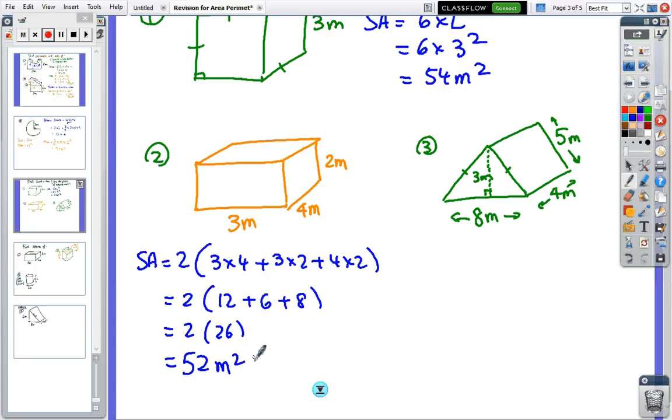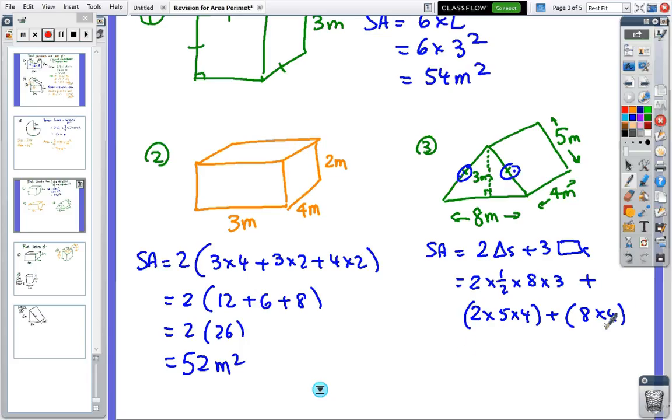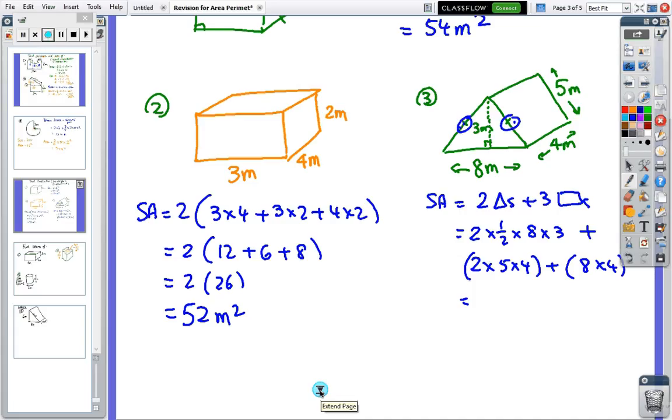And the last one is a triangular prism. Now, the formula, there really isn't a formula. There's just two triangles and three rectangles you have to work out. Okay, so the two triangles are half, base is eight, height is three, and the rectangles. Two of the rectangles are going to be the same. So, we've got two rectangles are the same, two five by four, so that's two of the rectangles. And the last rectangle on the bottom is eight by four. So, the answer, I think, is 96. I know I'm rushing through, but I think the answer is 96. Okay, so two triangles and three rectangles. And you've got to work out are the rectangles the same or are they different? In this particular case, two of the rectangles are the same and the last rectangle on the bottom is different.